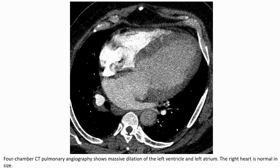On quad-chamber CT pulmonary angiography, there is massive dilatation of the left ventricle and left atrium, with the right chambers appearing normal in size.